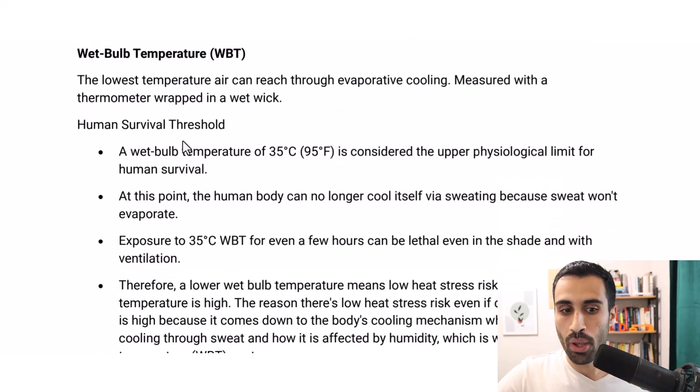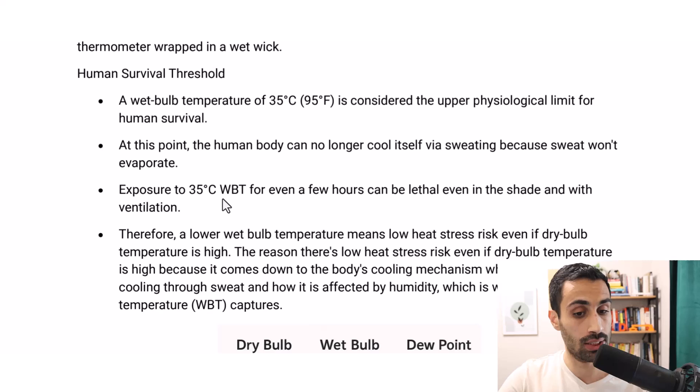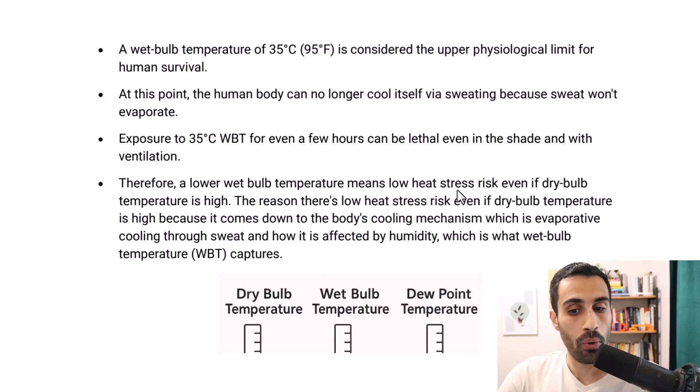Now, relating this to heat stress. Human survival threshold at wet bulb temperature of 35°C, which is 95°F. This is the wet bulb temperature, not the dry bulb. It's considered the upper physiological limit for human survival. At this point, the human body can no longer cool itself through sweating, because the sweat won't evaporate. Exposure to 35°C wet bulb temperature, even for a few hours, can be lethal, even in shade and with ventilation. Therefore, a lower wet bulb temperature means low heat risk.